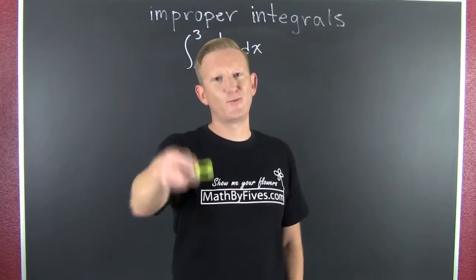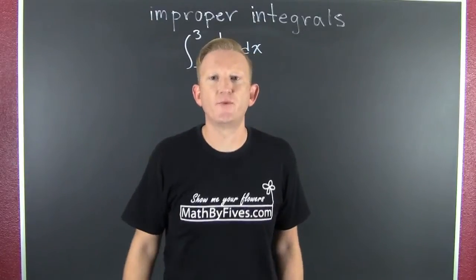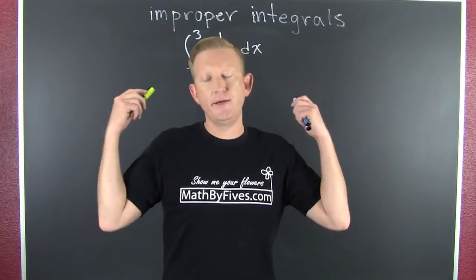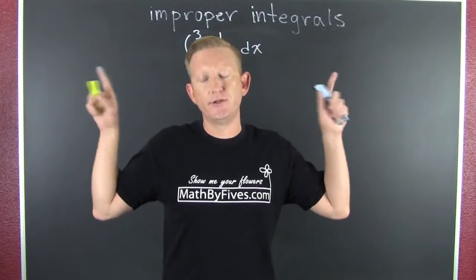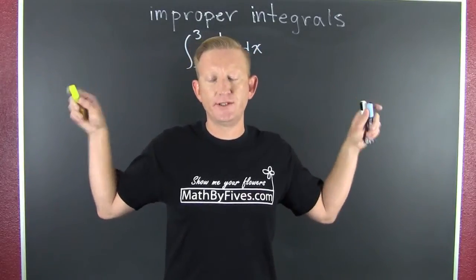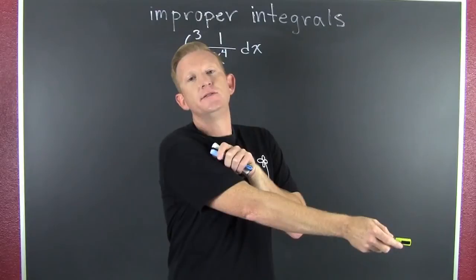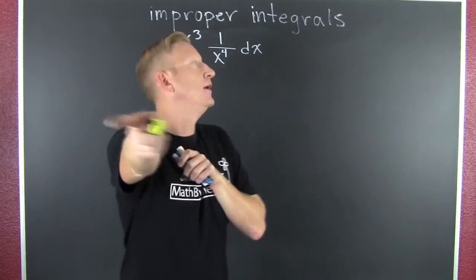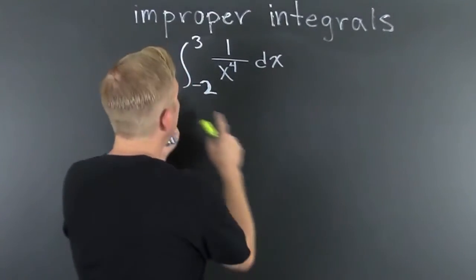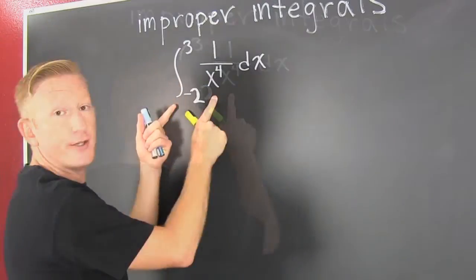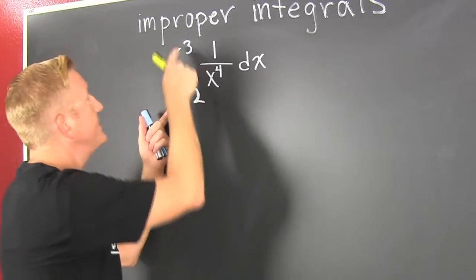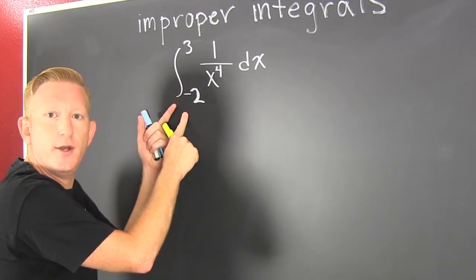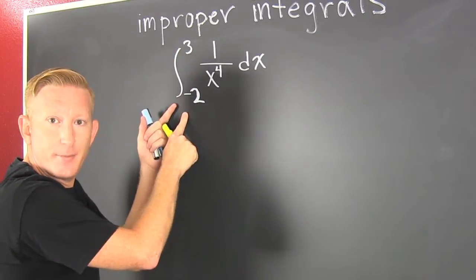Let's wrap it up with an improper integral — not at the endpoints, but somewhere in the domain. You can never divide by zero, and zero is in that domain, so we need to break it up.